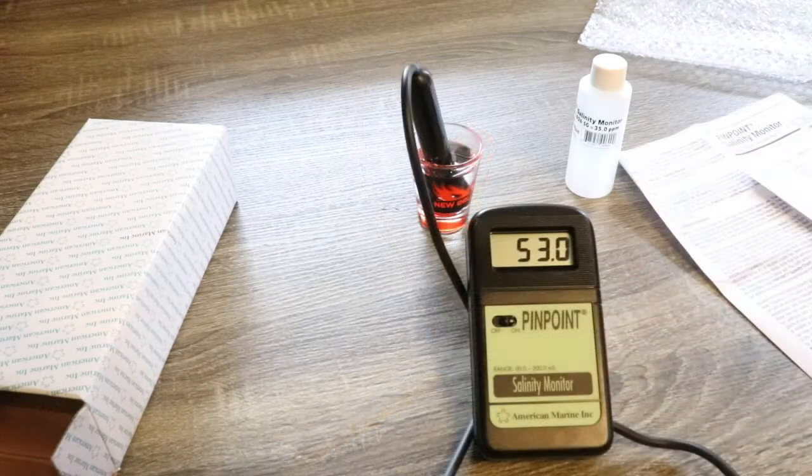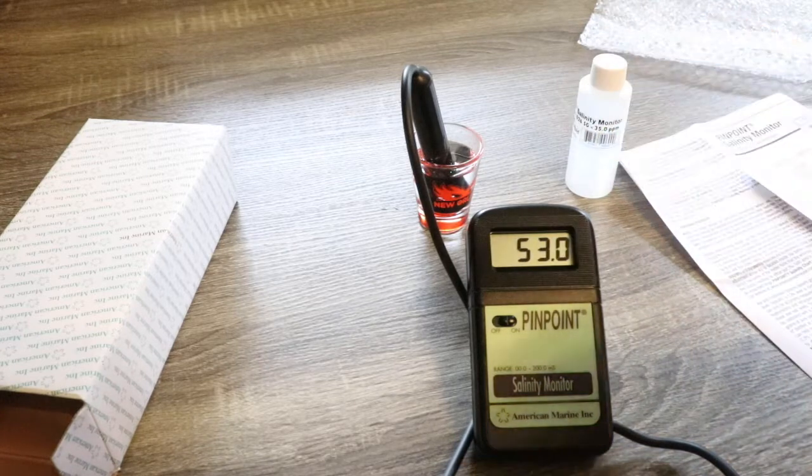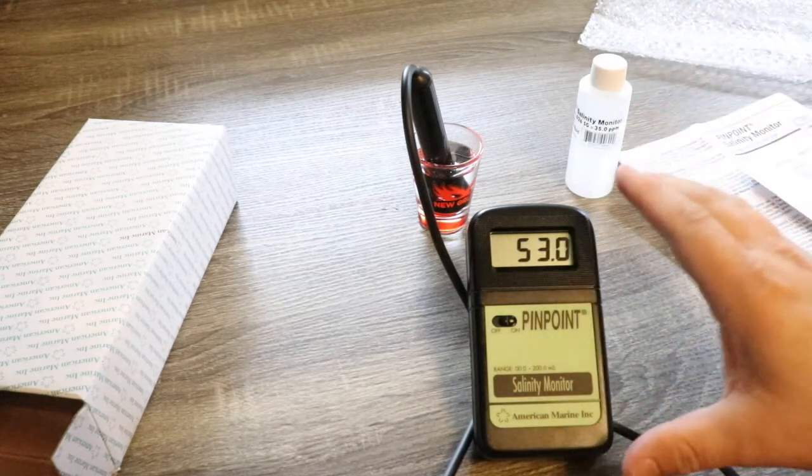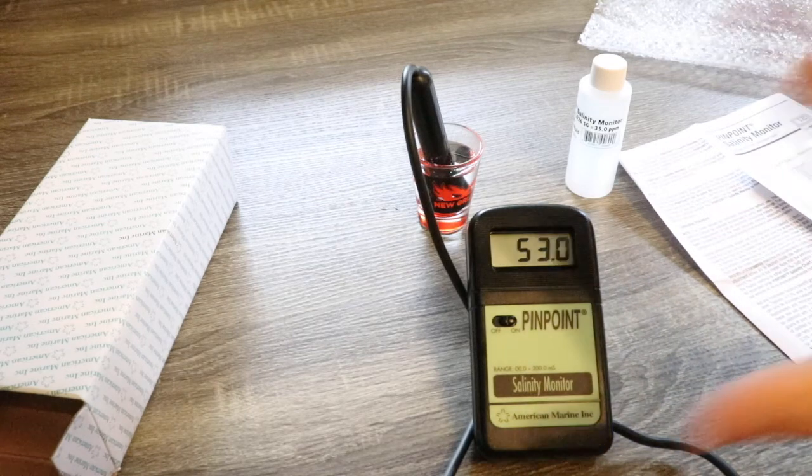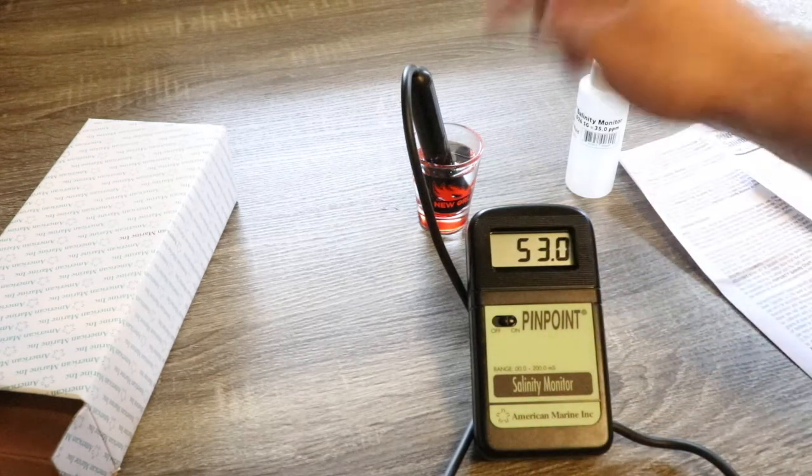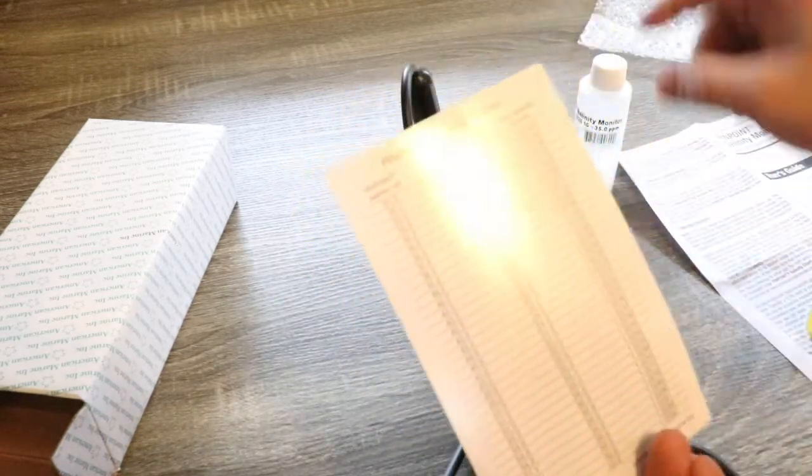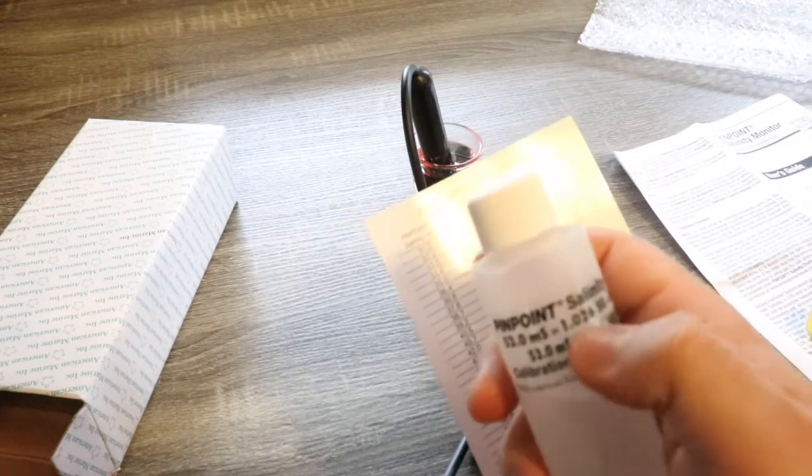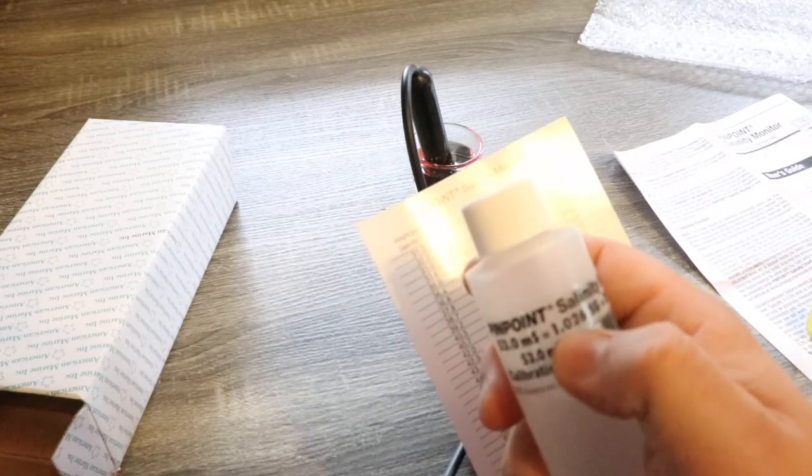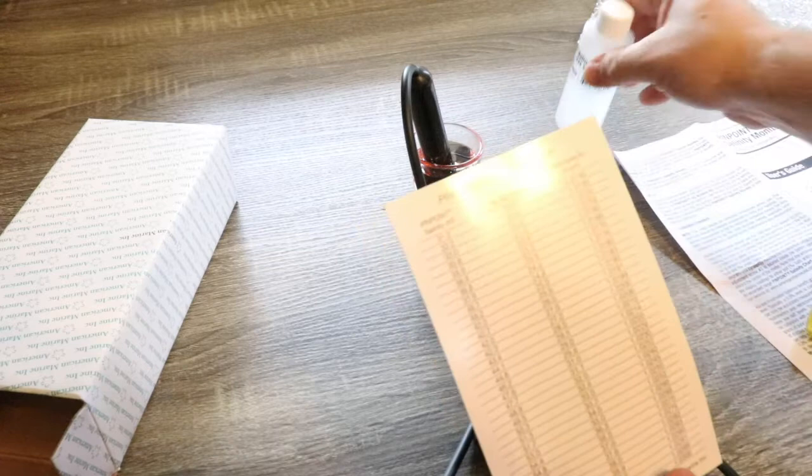All right, so we have the Pinpoint Salinity Monitor calibrated. It's been in the solution for a good five to ten minutes and we are holding at 53.0. Now what this is measuring is conductivity of the solution, and we need to convert that on our chart to get our salinity reading. So the calibration fluid is designed to be at 53.0, and that equals 1.026 specific gravity and 35 parts per thousand salinity.